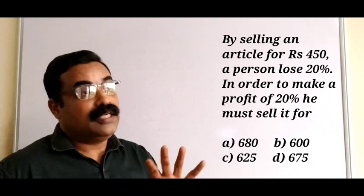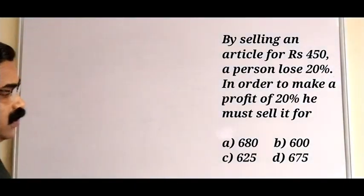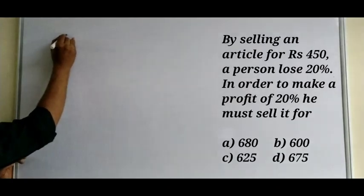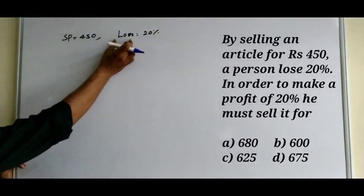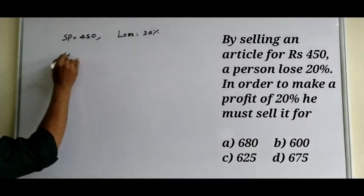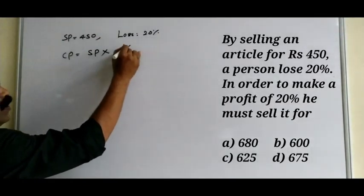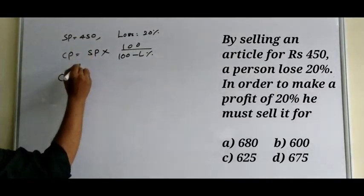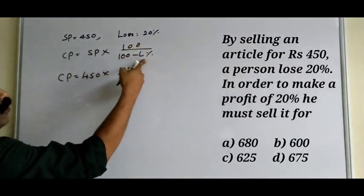According to the given information, let us find CP. The selling price is given as 450 rupees, and the loss percentage is 20%. When loss percentage and SP are given, we can find CP using the formula: CP equals SP multiplied by 100, divided by (100 minus loss percentage). So CP equals 450 into 100, divided by (100 minus 20), which is 80.